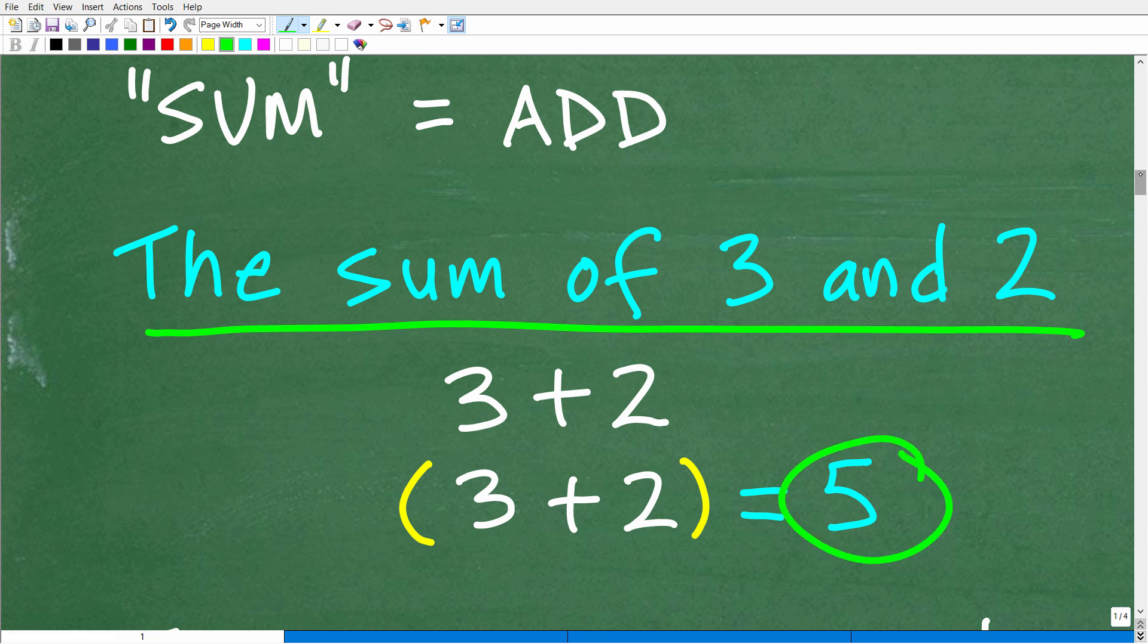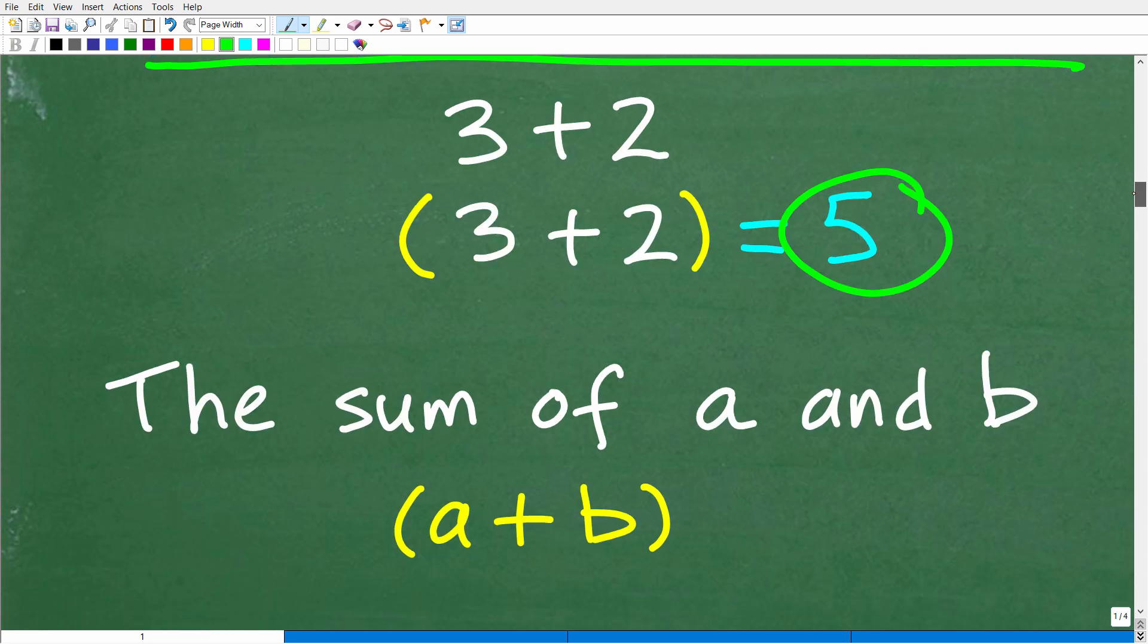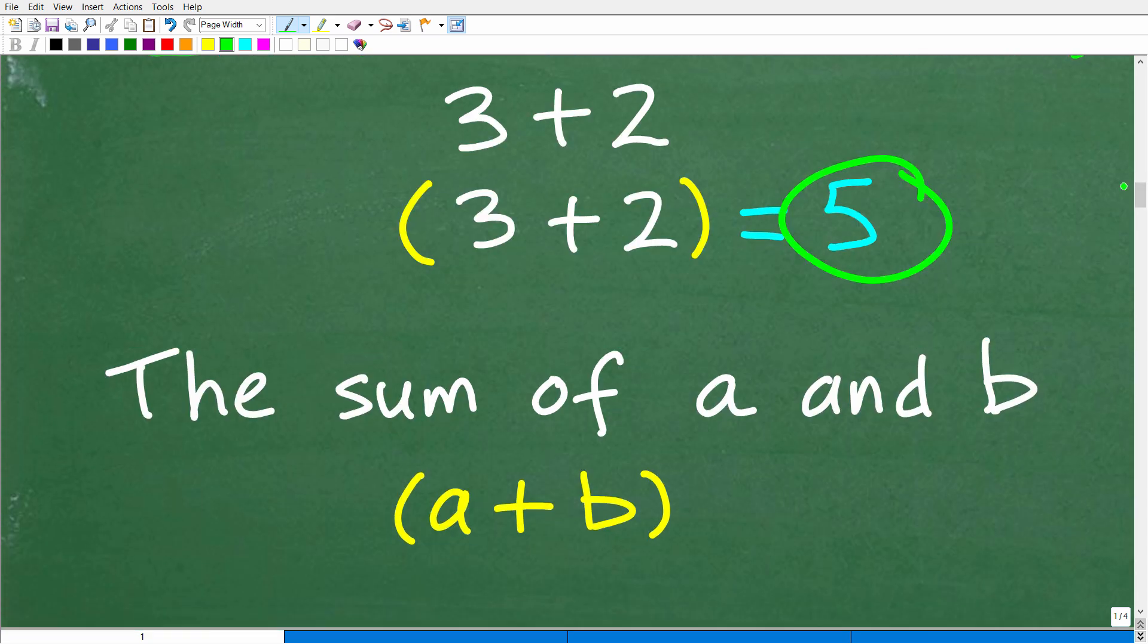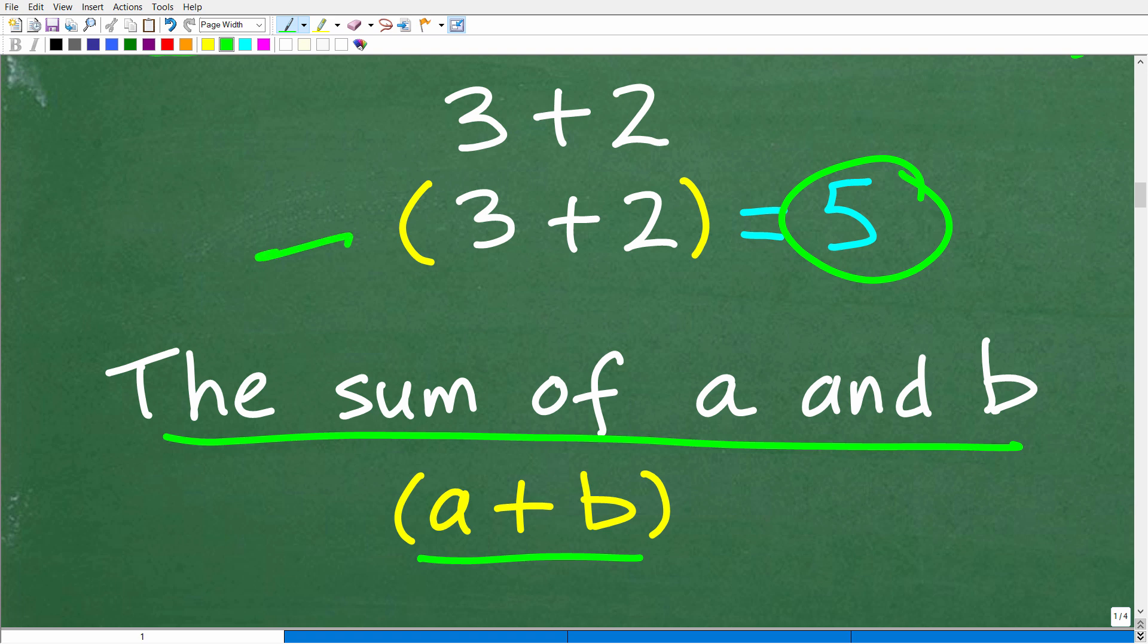Now, the technical definition or a more formal definition is the following. The sum of A and B is equal to A plus B. Okay, now one thing that you may notice here is I have parentheses around the sum. So anytime you are talking about the sum or difference, subtracting or adding things, it's a good idea to put grouping symbols or parentheses around that operation.